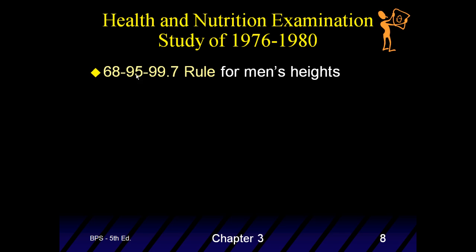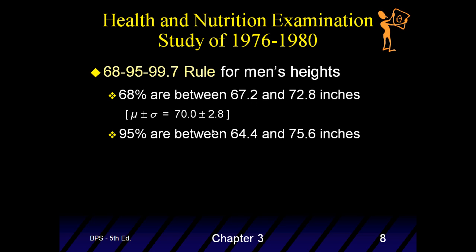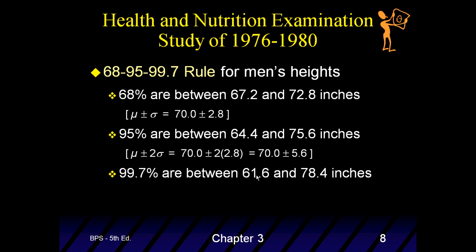The next thing is, for the 68, 95, 99.7 rule for men's heights, we have one standard deviation from both sides. This is how it's found. Take 70, add, subtract, 2.8, and 68% of the people, or the men, are in this range. For 95%, it's this range, and that's how it's found there. Two standard deviations, 5.6 on each side. And finally, 99.7, 3, 61.6, 78.4. And that's found by 3 times 2.8, 61.6. So, that's 5 feet 1.6. And this is 6 feet 8.4.